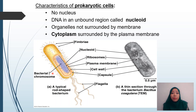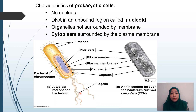All the organelles in prokaryotes are not surrounded by membranes, and the cytoplasm is surrounded by the plasma membrane. Looking at this structure, you can see the nucleoid region — there is no nuclear membrane — and this is where the bacterial chromosome is located. The small dot structures are the ribosomes. You can also see the plasma membrane, the cell wall, the capsule structure, and the flagella. This diagram is what is observed under a microscope.